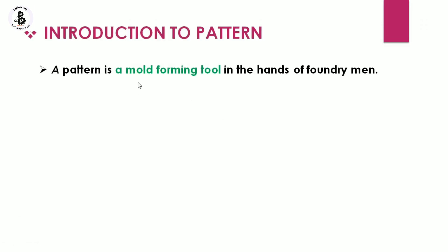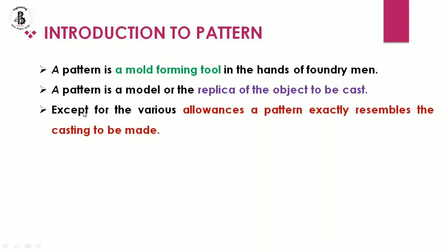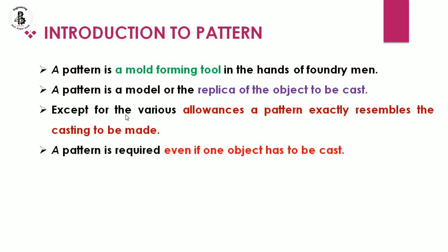Basically, a pattern is a mold-forming tool in the hands of foundrymen. In simple terms, a pattern is a model or replica of the object to be cast. Whatever you want to make, the pattern will have similar dimensions — it is a replica of the casting product. Except for the various allowances, a pattern exactly resembles the casting to be made. A pattern is required even if only one object has to be cast.